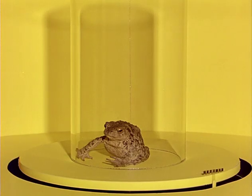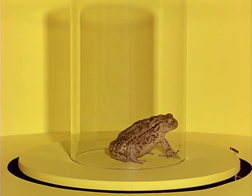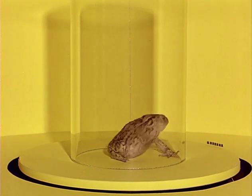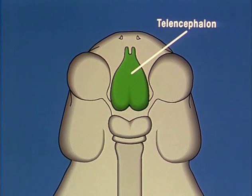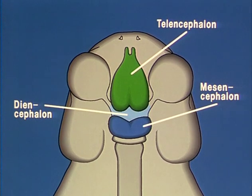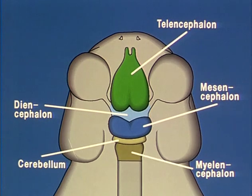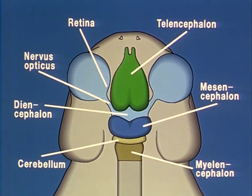We are searching now for the neurophysiological basis of such pattern discrimination. The toad's brain consists of the telencephalon, diencephalon, mesencephalon, cerebellum and myelencephalon. Retina and optic nerve represent, embryonically, a protuberance of the diencephalon.